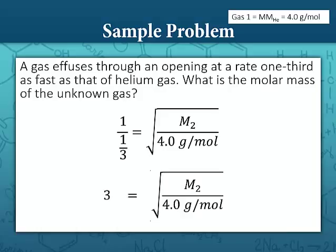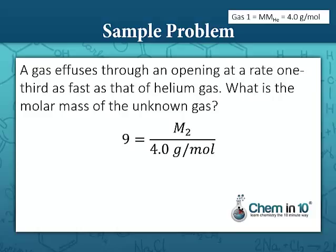To solve this problem, we need to get rid of that square root, so we're going to square it. What we do to one side, we have to do to the other. When we square each side, three squared equals nine, and we get the molar mass of gas two outside of the square root. So nine equals our unknown molar mass divided by the molar mass of helium, 4.0 grams per mole.